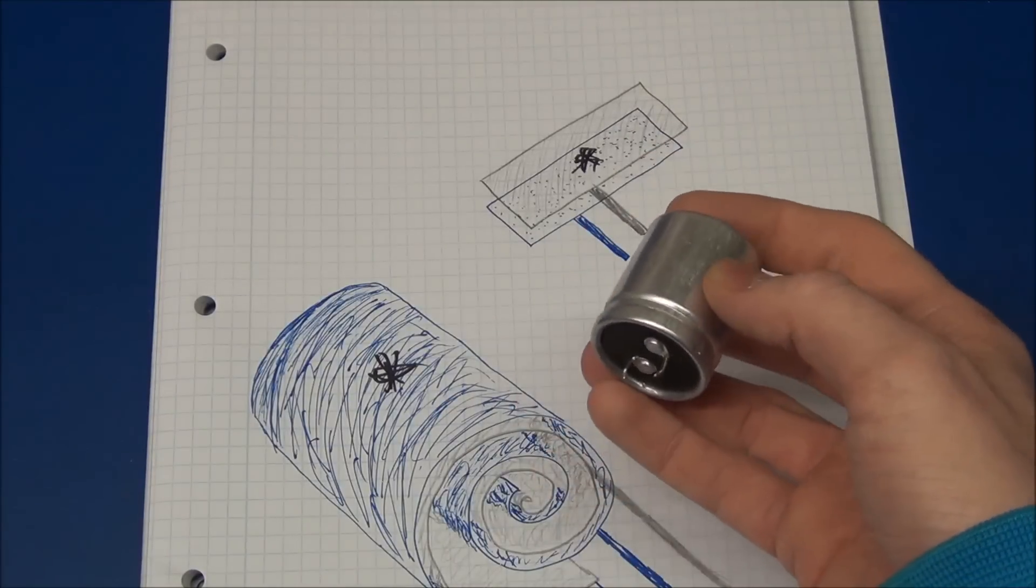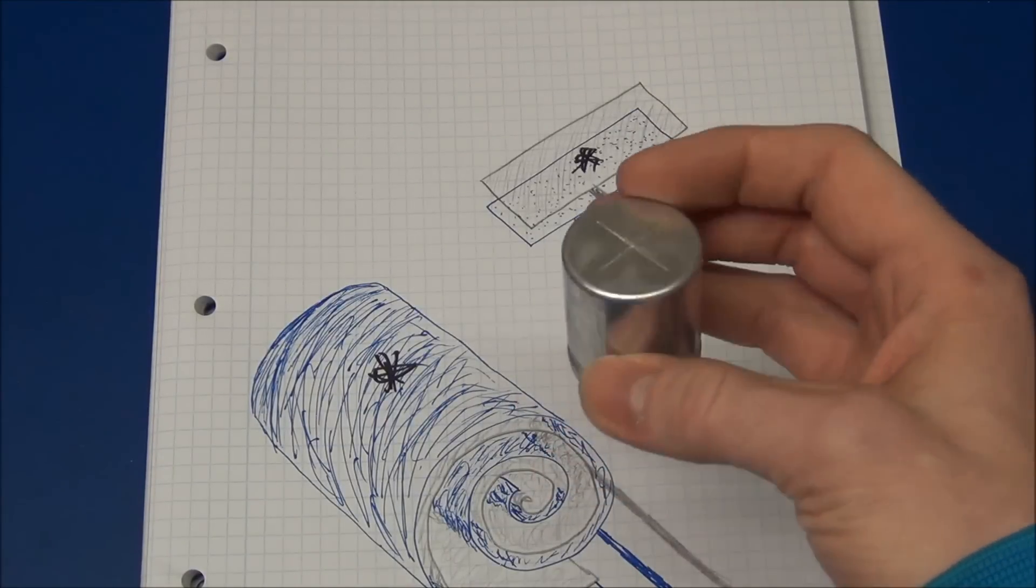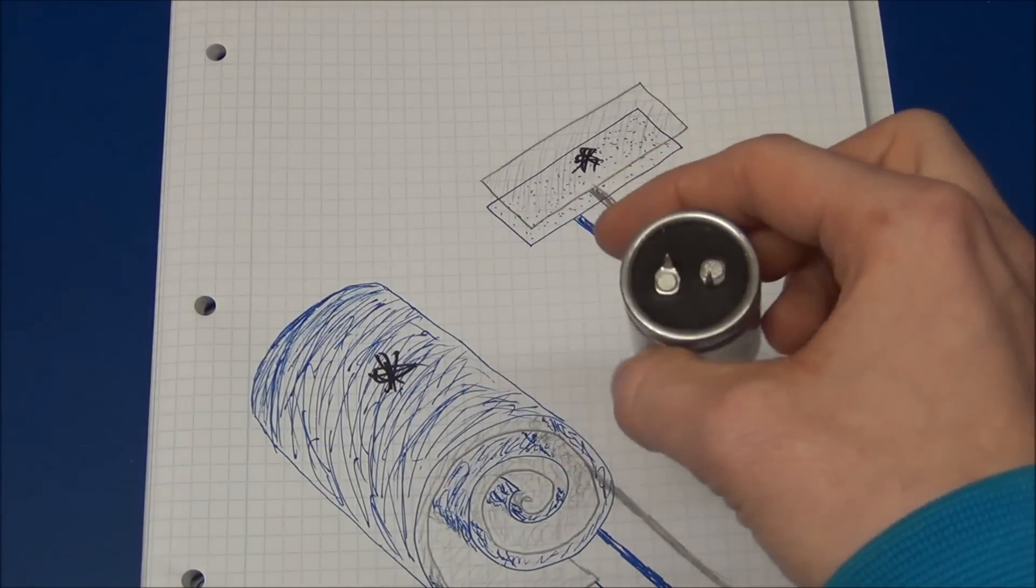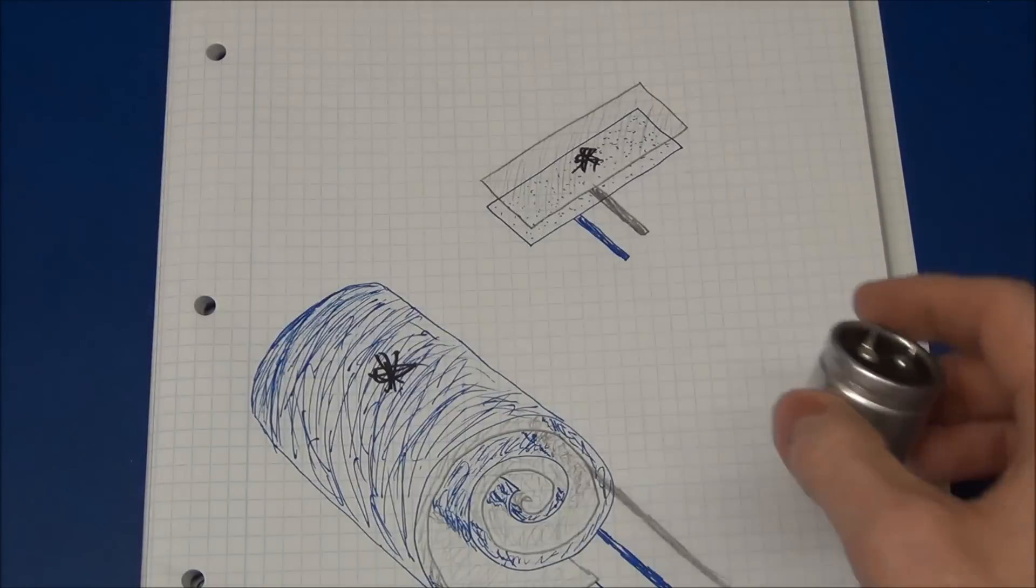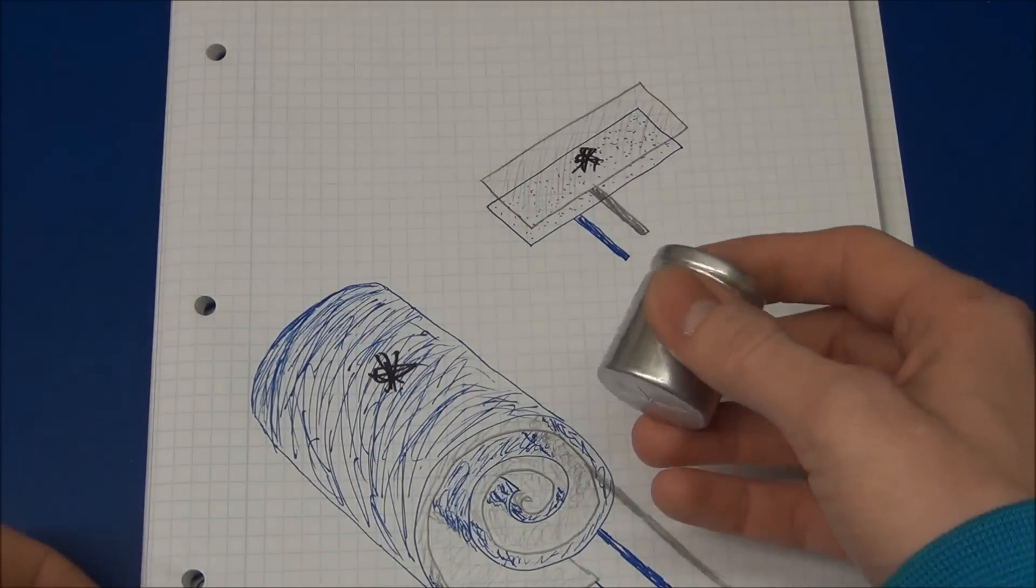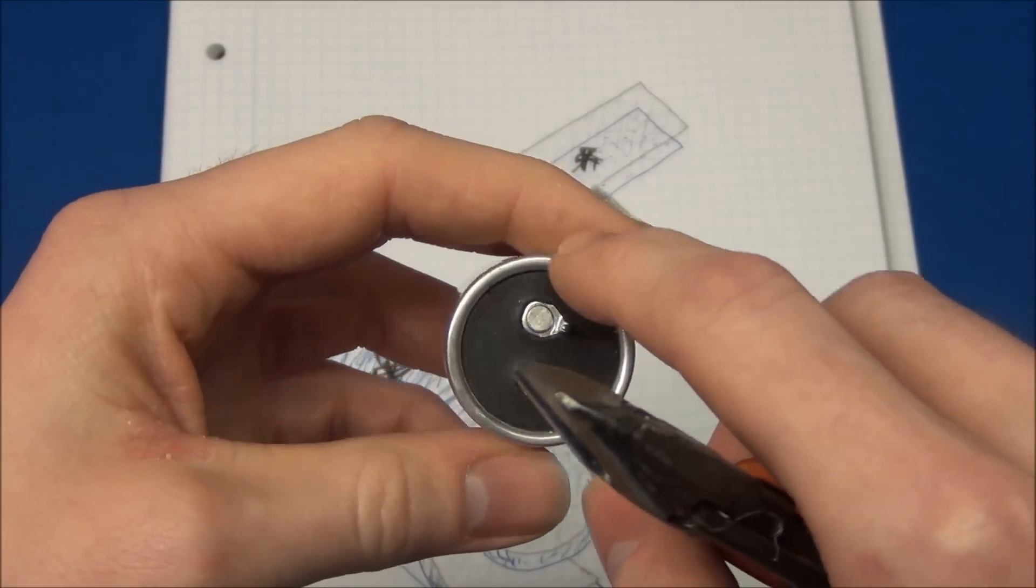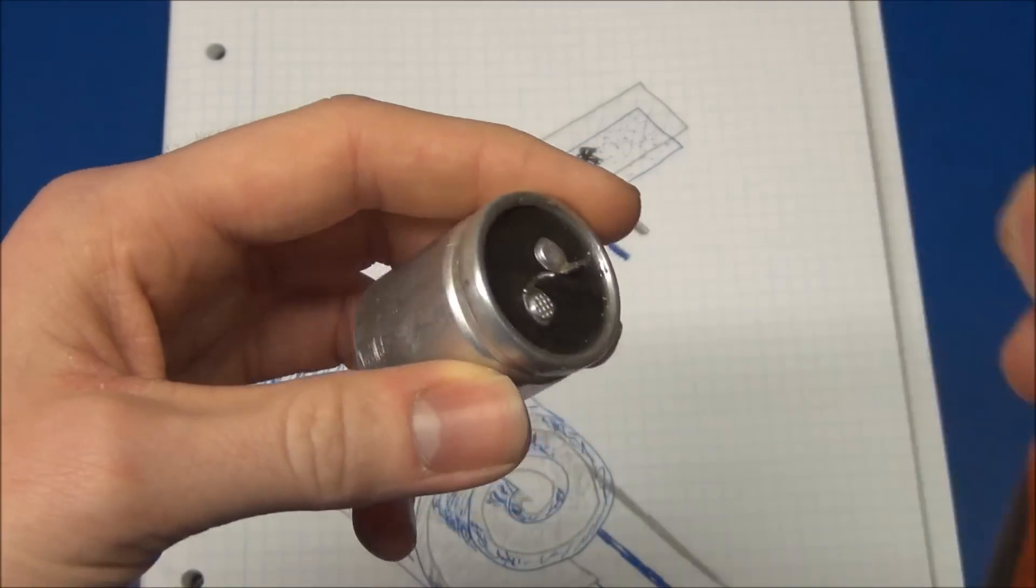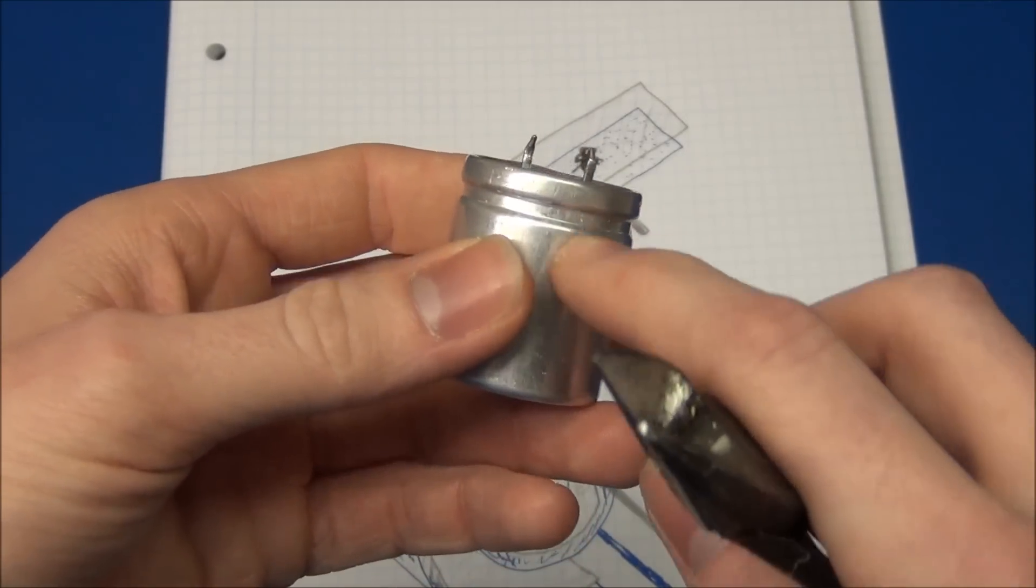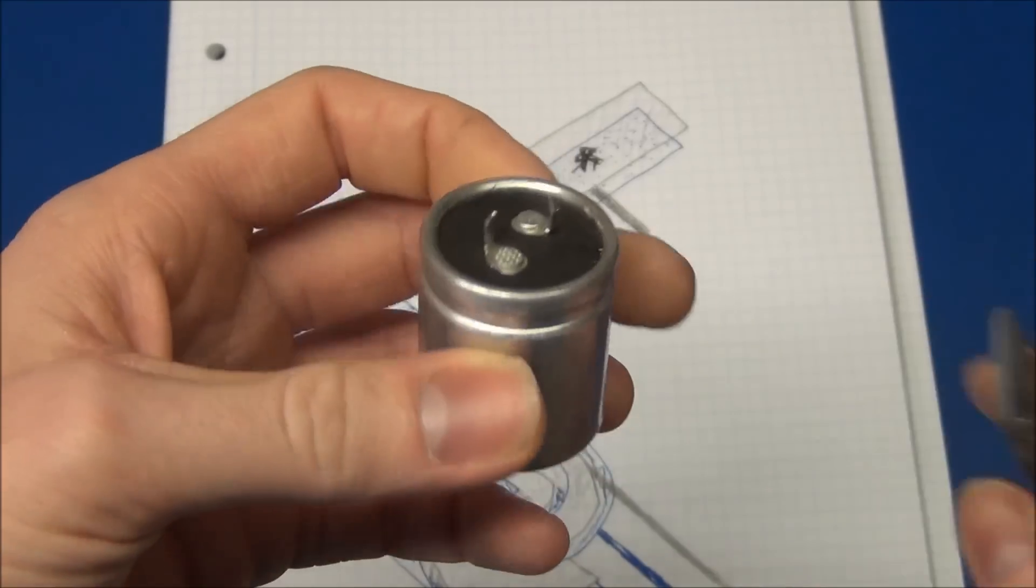And this was able to blow the fuse inside the receiver so that is how much current that actually went through it. So let's try to take it apart and see if we can see anything. And I'll try to cut this top brim here and see if we can pull the insides out. I don't know if it is actually sealed down here but we'll find out.